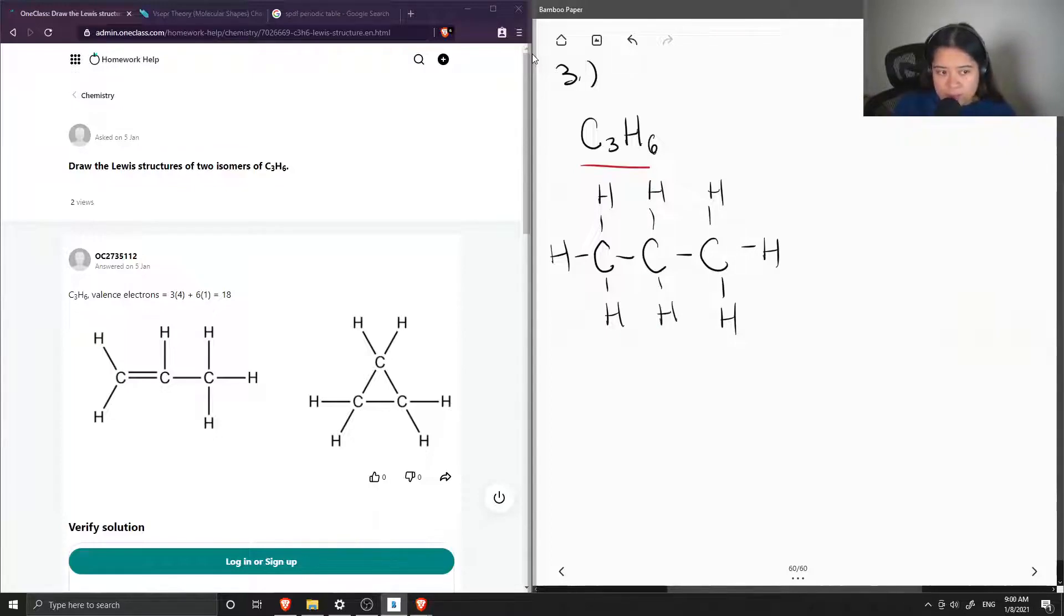I have three carbons and then one, two, three, four, five, six, seven, eight hydrogens. So we have more hydrogens than we need.